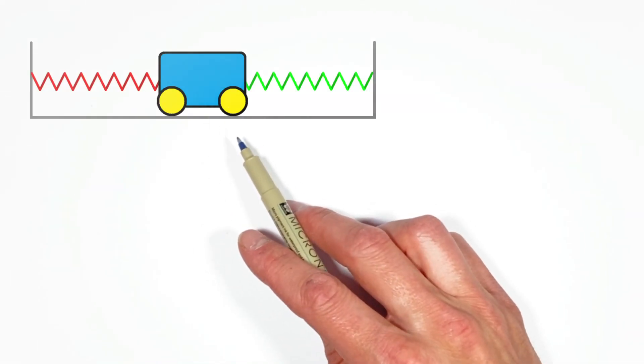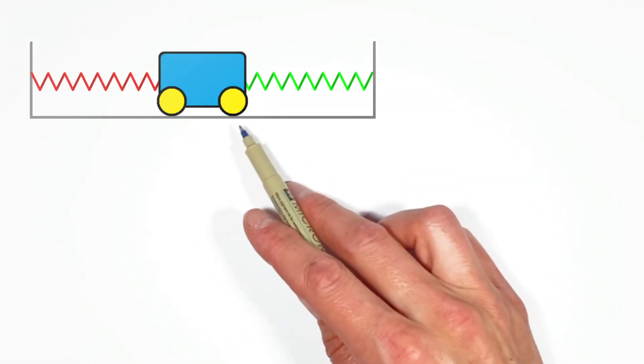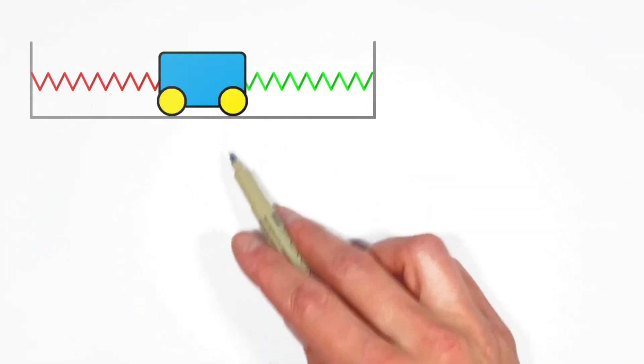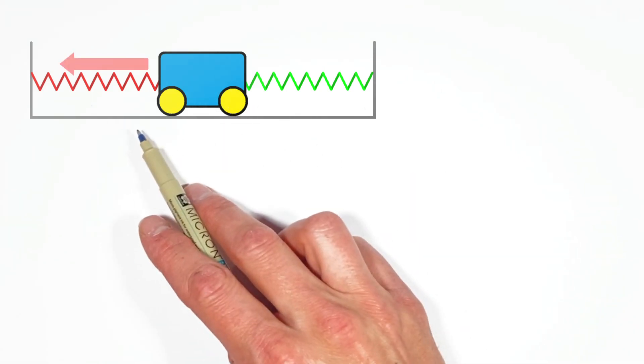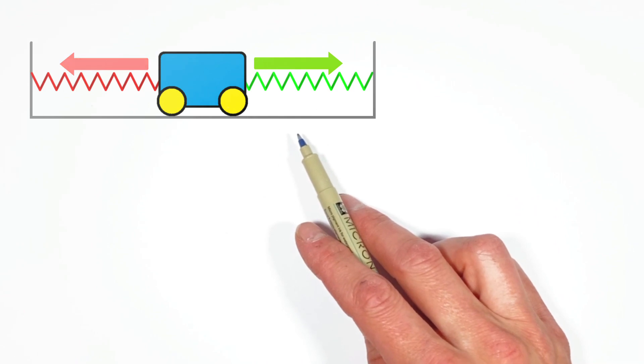All right, I see people get tripped up on this quite a bit. You see, what we've got is a cart right here, which is sitting in equilibrium between two springs. One spring pulling it to the left, the other spring pulling it to the right.